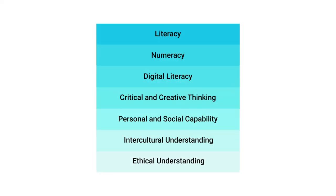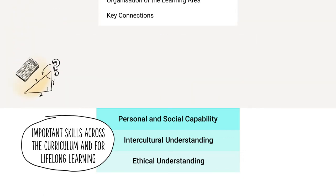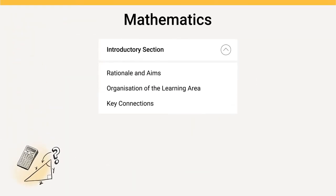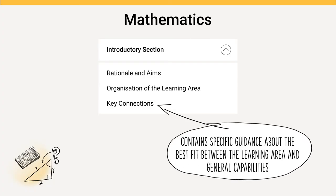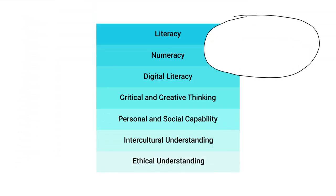The general capabilities reflect the understanding and skills that students need to be confident and creative individuals, lifelong learners and active citizens. They are taught through the relevant learning areas. Therefore, in the introductory key connections section, there is specific guidance about the best fit between the learning area and the general capabilities. Not all general capabilities will be developed in every learning area.